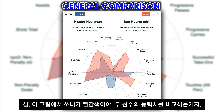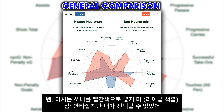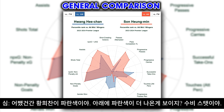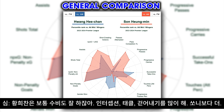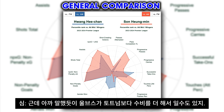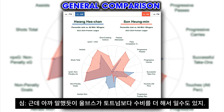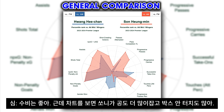In terms of the general comparison pie chart, Son is in red and Hwang in blue. One thing that's clear is the blue at the bottom represents defensive stats — something Hwang generally performs quite well at. He makes a lot more interceptions, tackles, and clearances than Son does, though again, that may be because Wolves are in a lot more defensive situations and Hwang is tracking back a lot more. But he clearly puts the defensive work in.